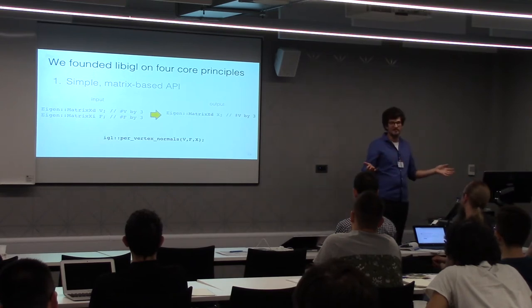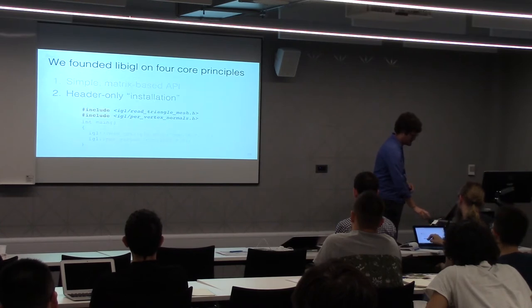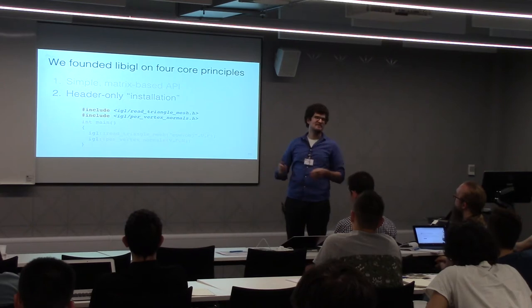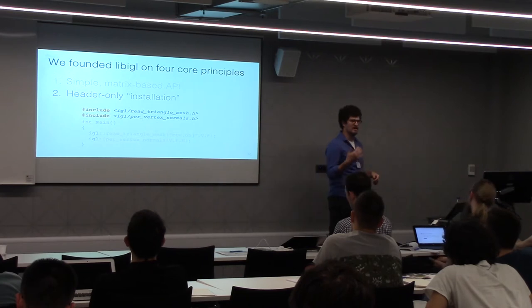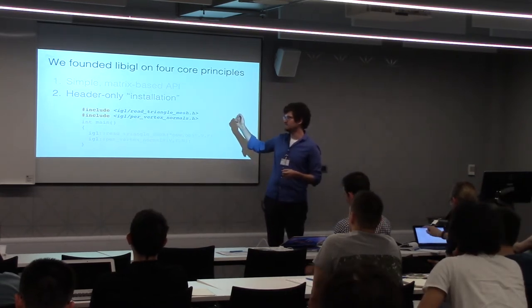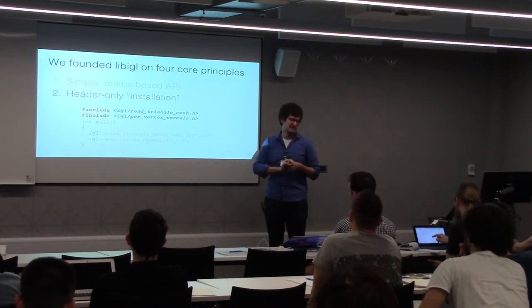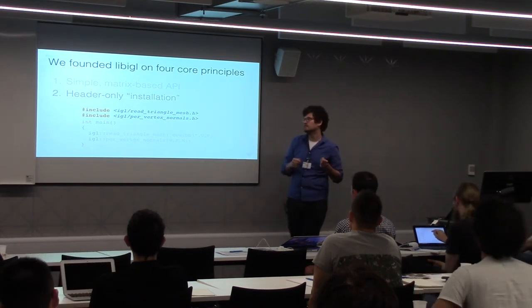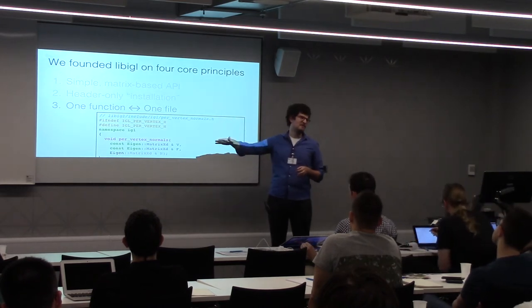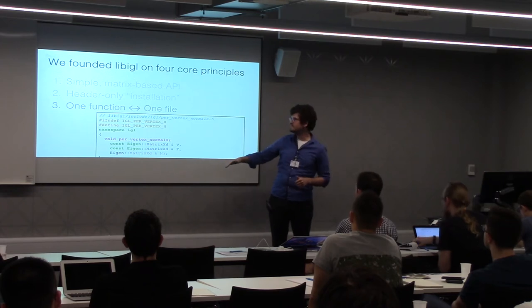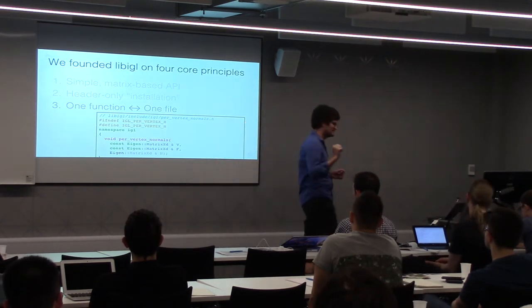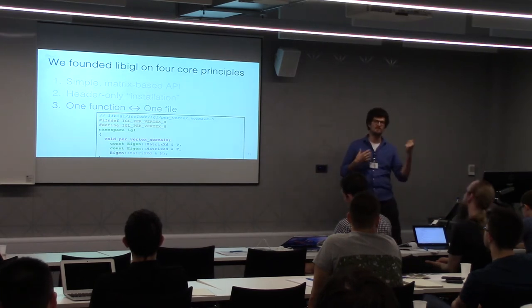Going back to the core motivation for LibIGL: a simple matrix-based API and a header-only installation. Anyone who's done C++ knows it can be a headache to compile other people's code. We put a lot of emphasis on making our code easy to use right out of the box. If you want to read a mesh and compute normals, all you have to do is download our code and add two lines — include read_triangle_mesh and include per_vertex_normals. It's a function-based library with a bijection between functions and files.